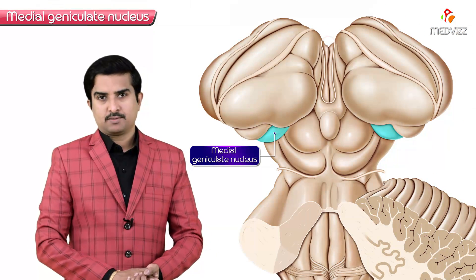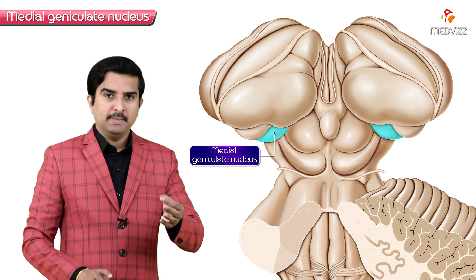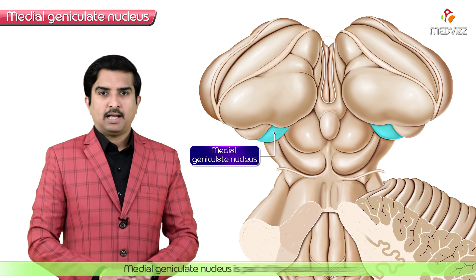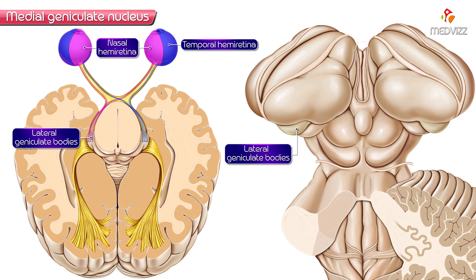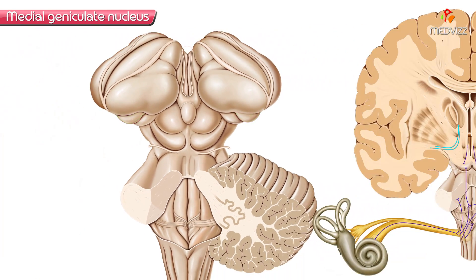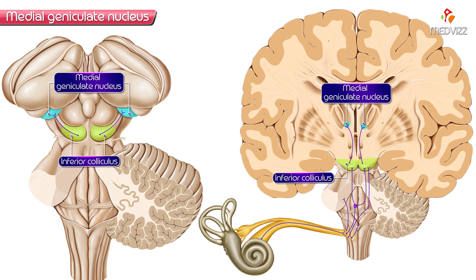The Medial Geniculate Nucleus, also called the Medial Geniculate Body, is part of the auditory system. The Lateral Geniculate Body, by contrast, is part of the visual system. The Medial Geniculate Body receives ascending fibers from the inferior colliculus of the brain via the inferior brachium, or brachium of the inferior colliculus, to the Medial Geniculate Body.